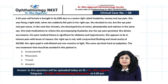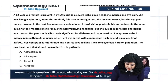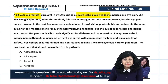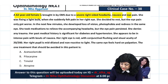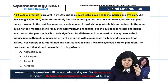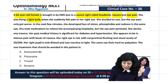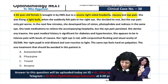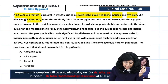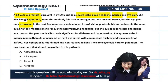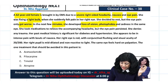Welcome to Clinical Scenarios, Case 38. A 62-year-old female is brought to the emergency due to severe right-sided headache with nausea and eye pain. She had this pain while fixing a light bulb, when she suddenly felt pain in her right eye. She decided to rest but the eye pain got worse — not relieved even by rest. Within the next few minutes, she developed loss of vision, photophobia, and redness.